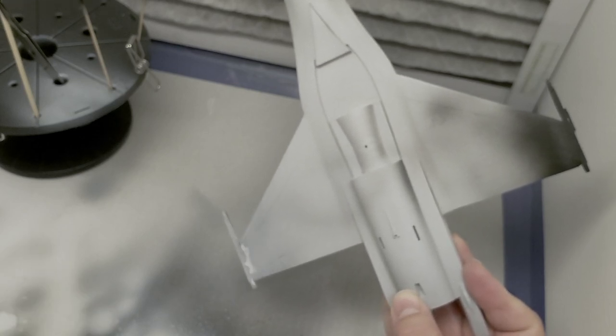I just used the regular Vallejo white paint for this. It wasn't the model air kind, so I did thin it down a little bit with some Vallejo thinner. I'm still trying to get the hang of this airbrush. I haven't really airbrushed in a long time either. I got the Iwata Eclipse and I think I'm going to like it once I get used to it.